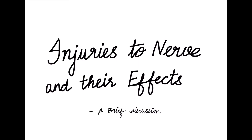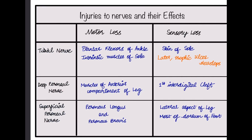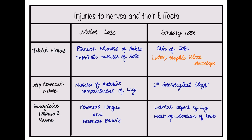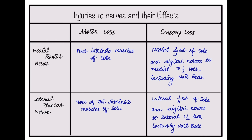Finally, looking at injuries to nerves and their effects: in case of sciatic nerve injury, foot drop occurs. Common peroneal nerve injury also leads to foot drop. In case of tibial nerve injury, due to sensory loss, a trophic ulcer may develop. That concludes the tibial nerve and common peroneal nerve, which are the branches of the sciatic nerve.